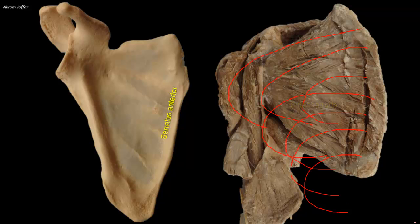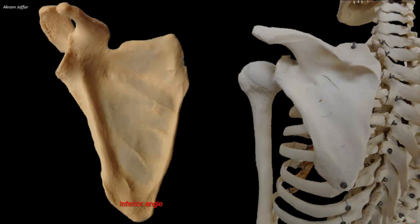The last four digitations of serratus anterior are attached to a roughened area on the costal surface of the inferior angle. From the inferior angle of the scapula, the thick lateral border runs superolaterally toward the apex of the axilla; hence it is called the axillary border.